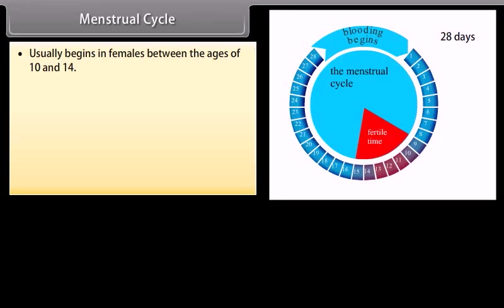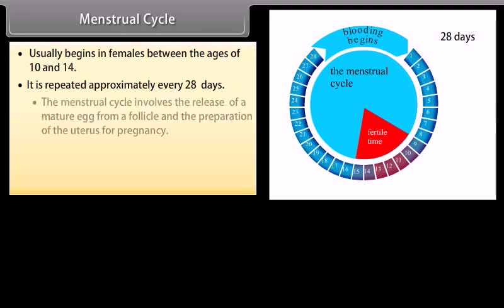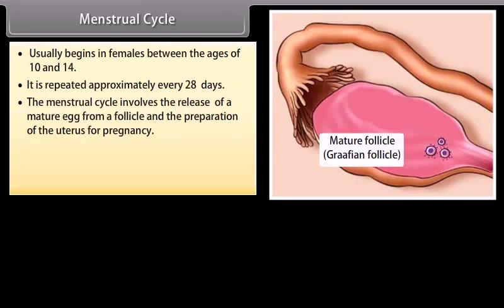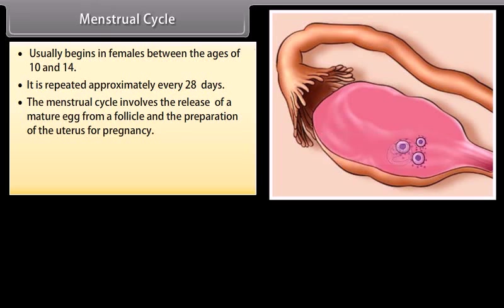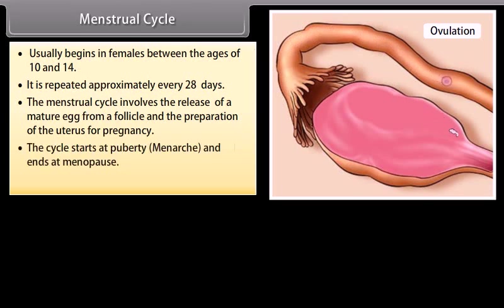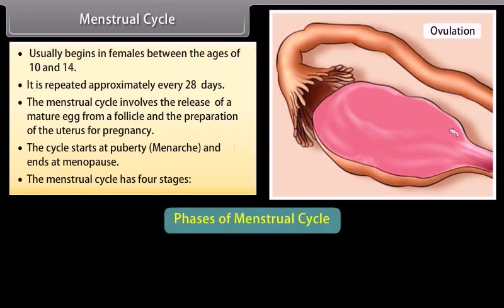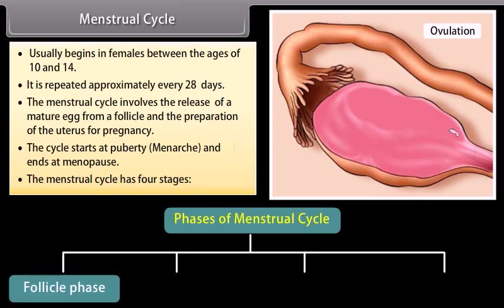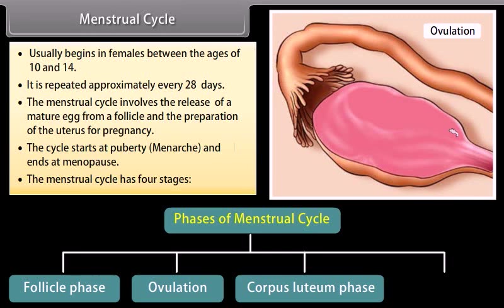The menstrual cycle usually begins in females between the ages of 10 and 14 and is repeated approximately every 28 days. It involves the release of a mature egg from a follicle and the preparation of the uterus for pregnancy. The cycle starts at puberty or menarche and ends at menopause. The menstrual cycle has four phases: follicle phase, ovulation, corpus luteum phase, and menstruation.